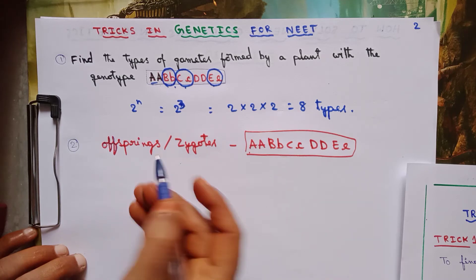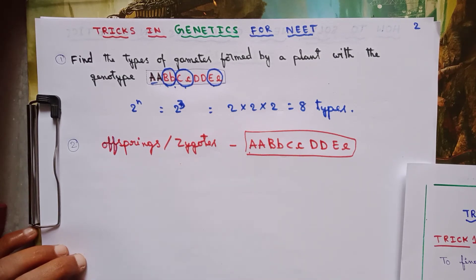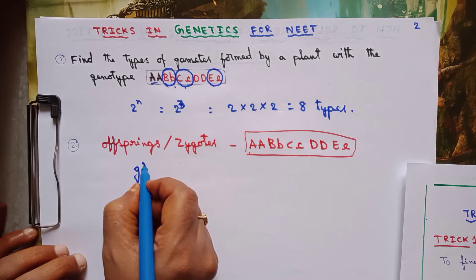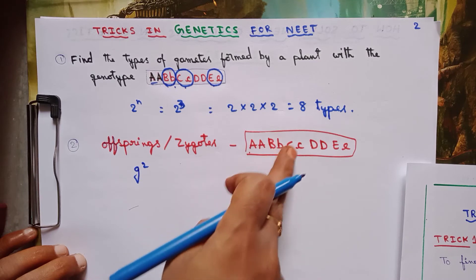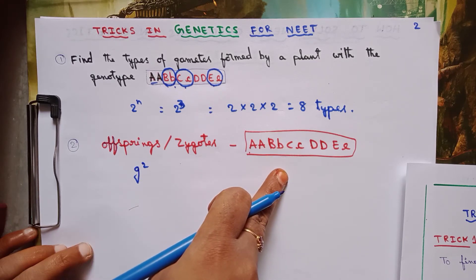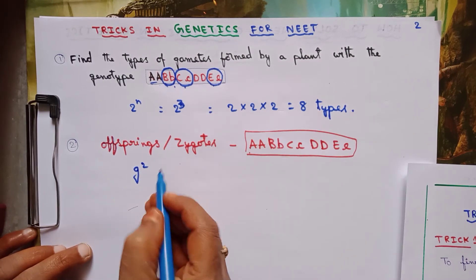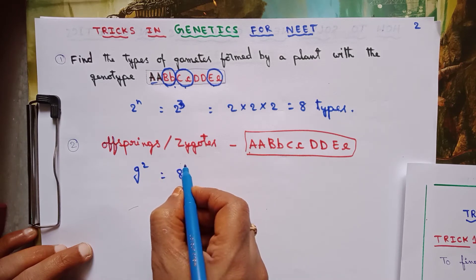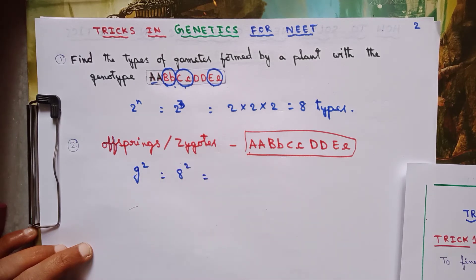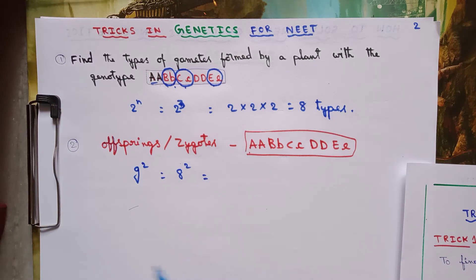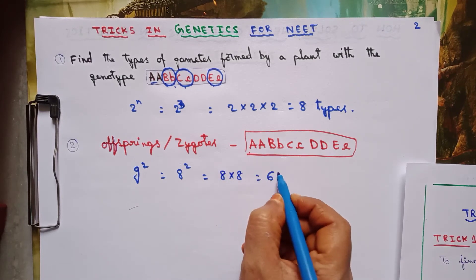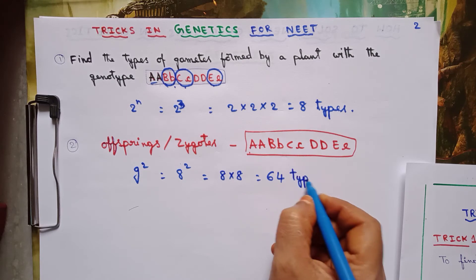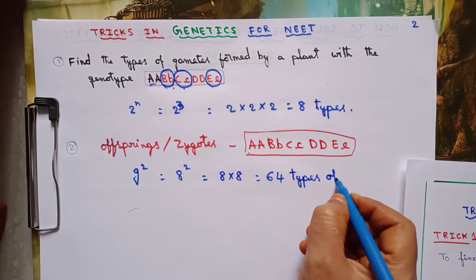For that, we have to use the formula: gametes squared. First we find how many types of gametes are formed from this plant — that is 8 types of gametes. So 8 squared equals 8 × 8 = 64 types of offsprings or zygotes.